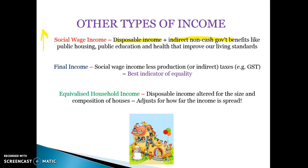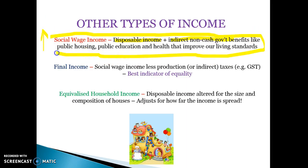Social wage income is more equitable than disposable income because low income earners get most of the access to indirect non-cash benefits — more access to public housing and public education generally — and therefore their social wage income is again more equitable. Social wage income is the most equitable distribution of income in Australia.